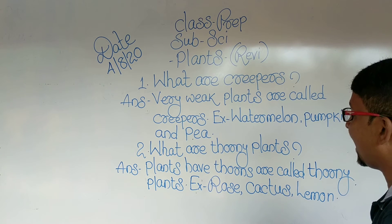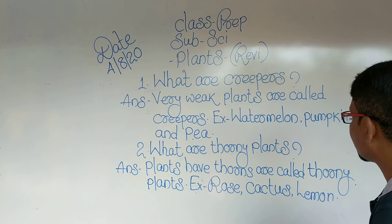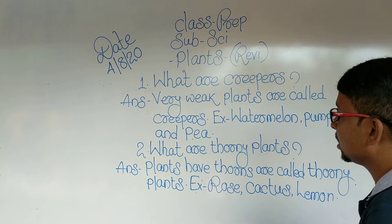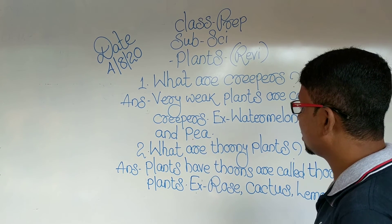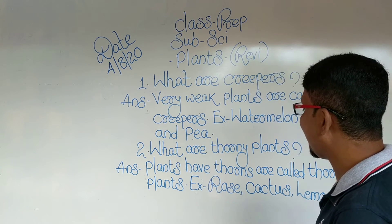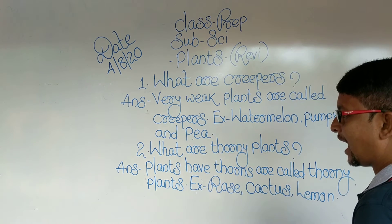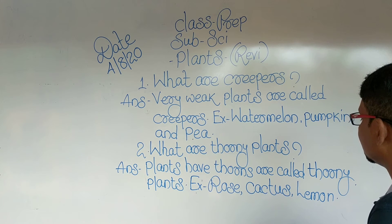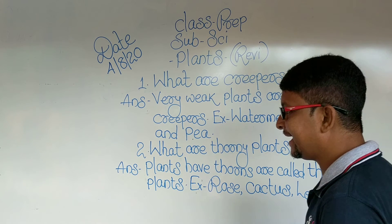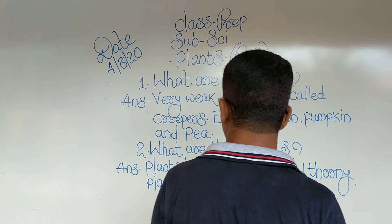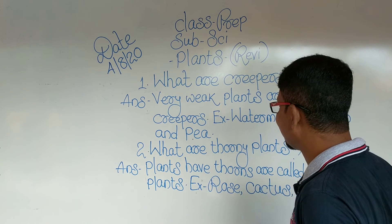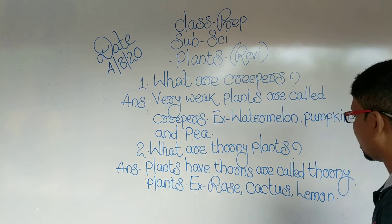Answer: Plants have thorns are called thorny plants. Spelling: P-L-A-N-T-S, plants. H-A-V-E, have. T-H-O-R-N-S, thorns. A-R-E, are. C-A-L-L-E-D, called. T-H-O-R-N-Y, thorny. P-L-A-N-T-S, plants. Plants have thorns are called thorny plants.